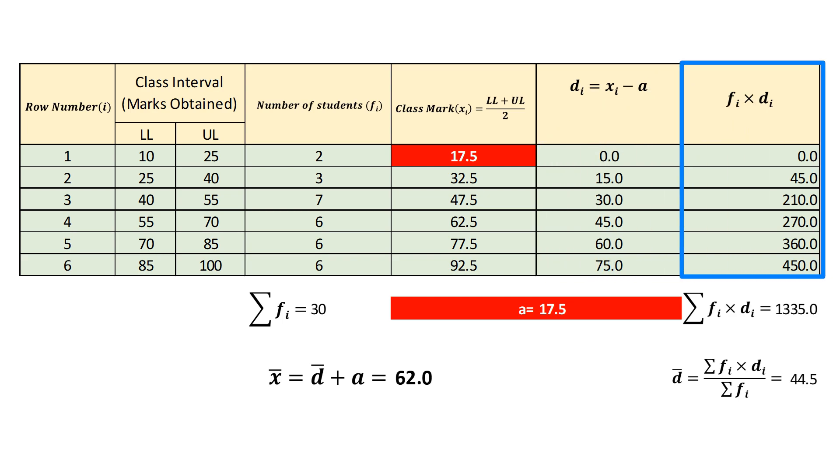Finally, we take product of f1, d1, f2, d2, f3, d3, f4, d4, f5, d5 and f6, d6 and add them up, which in this case equal to 1335. By dividing this quantity by sum of frequencies, we get d bar which equals 44.5. Since x bar equals sum of d bar and assumed mean a, by substituting the corresponding values, we get mean equals 62.